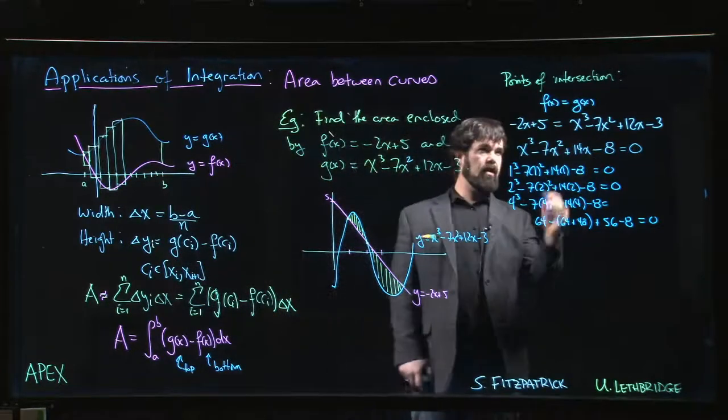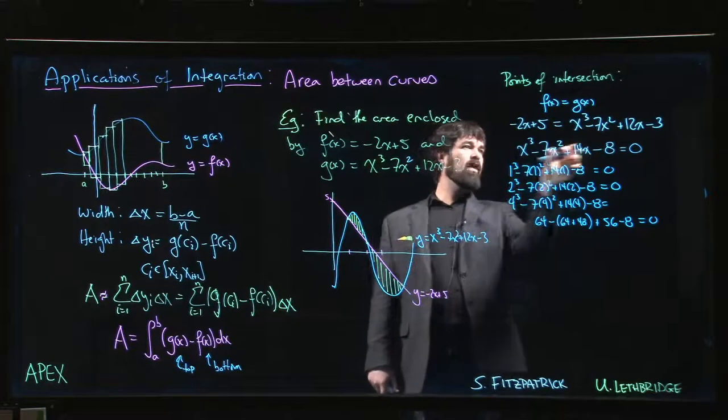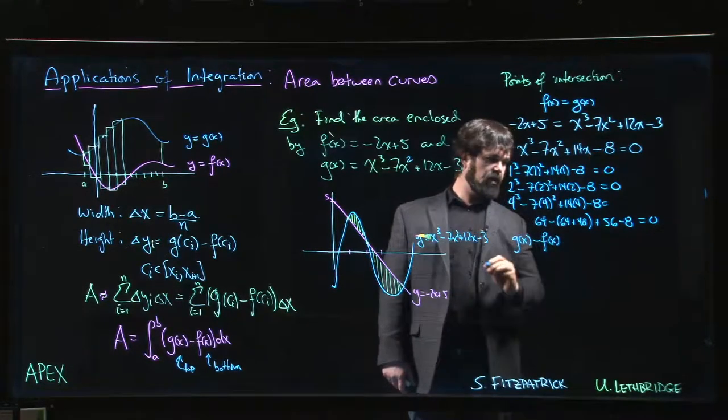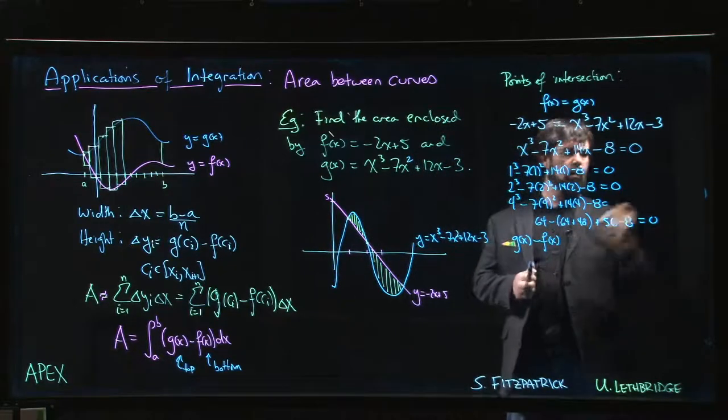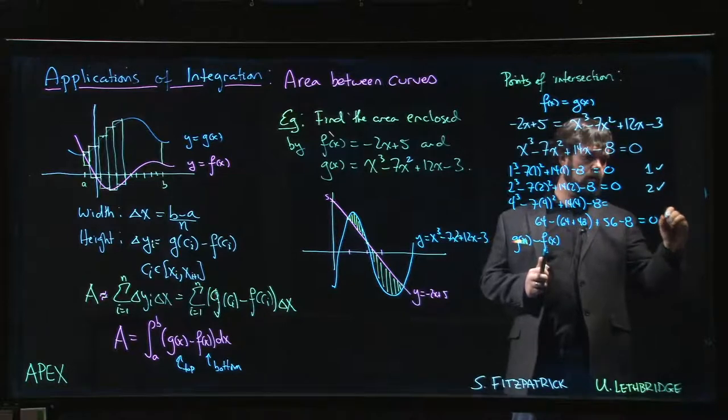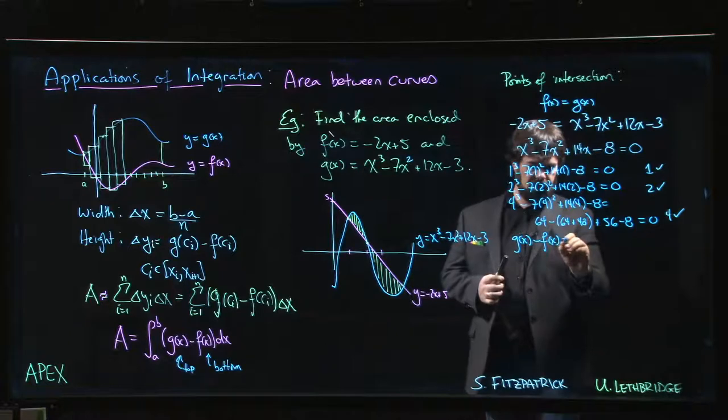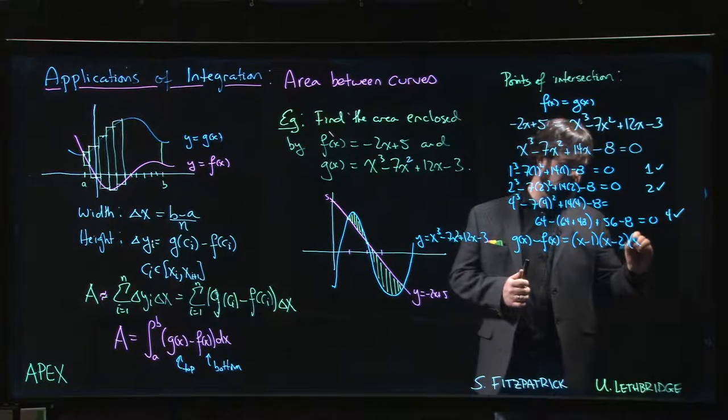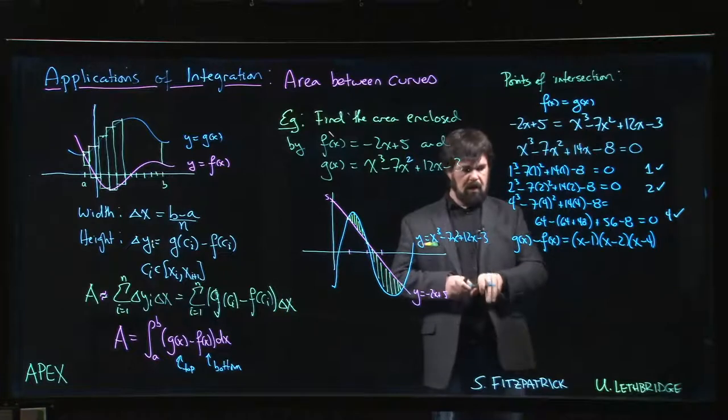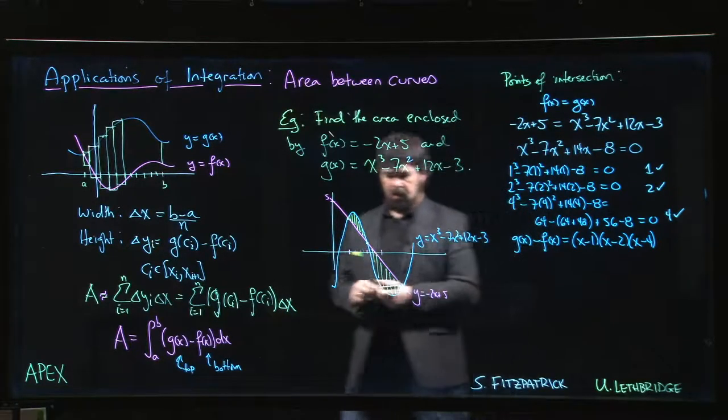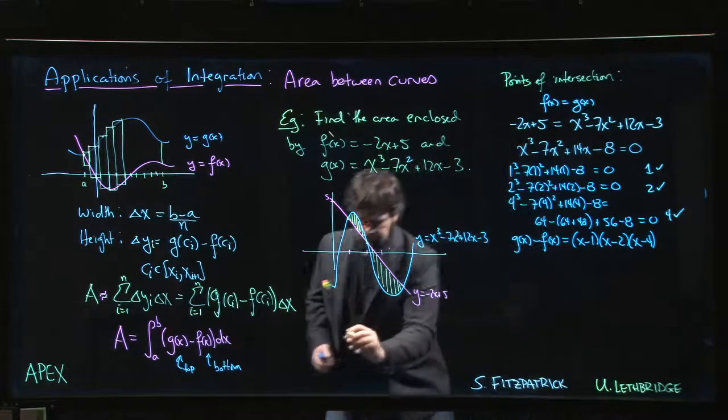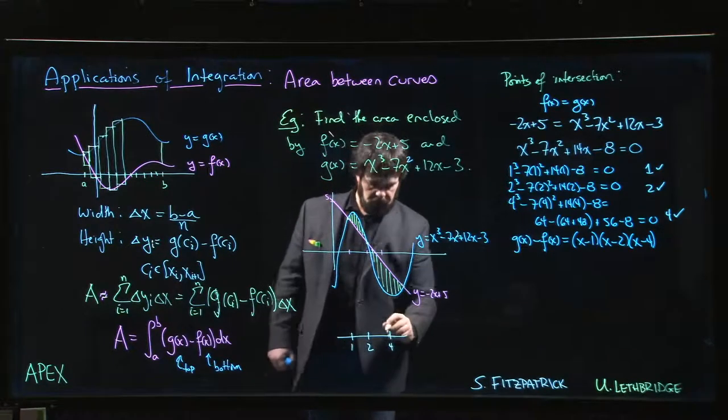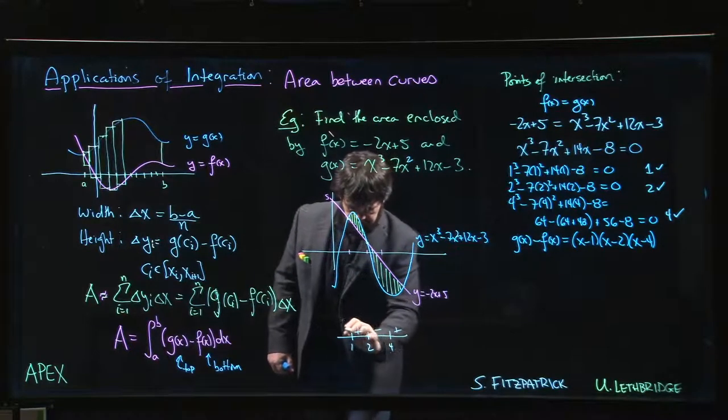So actually now we know that what we really have here is g of x minus f of x. Now that we found that our roots are 1, 2, 4, you can actually factor this. So this is going to factor as (x - 1)(x - 2)(x - 4). And then you've got your old friend, the sign diagram. If you mark off 1, 2, and 4, it's going to look like plus, minus, plus, minus.